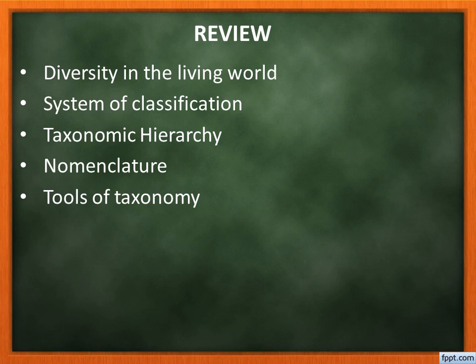In diversity in the living world, we discussed the various forms of animals found in the world. In the system of classification, we discussed various systems framed by scientists — for example, three domains, five kingdom, six kingdom, and seven kingdom classification. In the taxonomy hierarchy, we discussed the hierarchical order: kingdom, phylum, class, order, family, genus, species. Nomenclature means the naming and assigning of scientific names to organisms, and tools of taxonomy are certain tools which help in taxonomical studies.